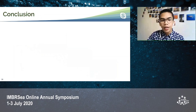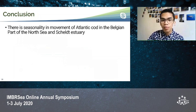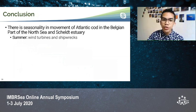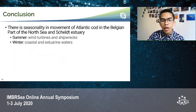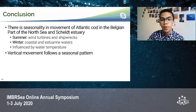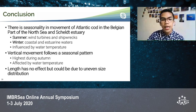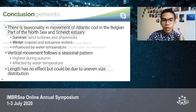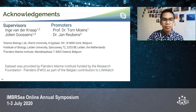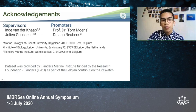In conclusion, there is seasonality in the movement of Atlantic cod in the Belgian part of the North Sea and Scheldt Estuary, wherein during summer they aggregate around wind turbines and shipwrecks, and during winter they are present around coastal and estuarine waters. This is influenced by water temperature. Vertical movement also follows a seasonal pattern, being highest during autumn, and is also affected by water temperature. Fish length had no effect on movement behaviors, possibly due to the uneven size distribution of the tagged cod. I would like to acknowledge my supervisors Inga and Yulene, my promoters Professor Dr. Tom Mons and Dr. Jan Reubens, and the Flanders Marine Institute for providing the data for this research.